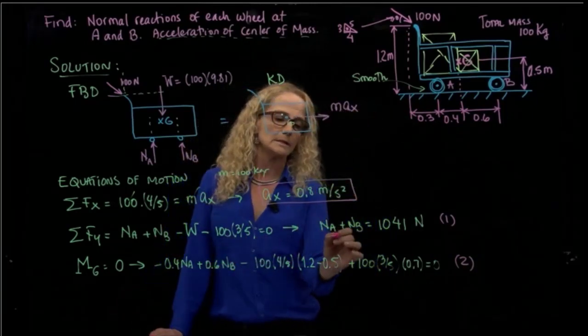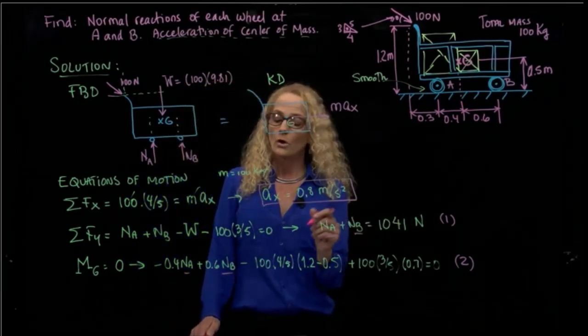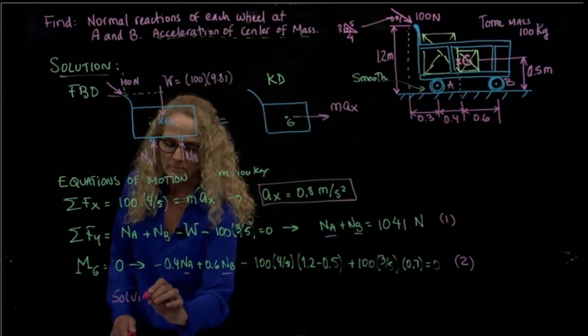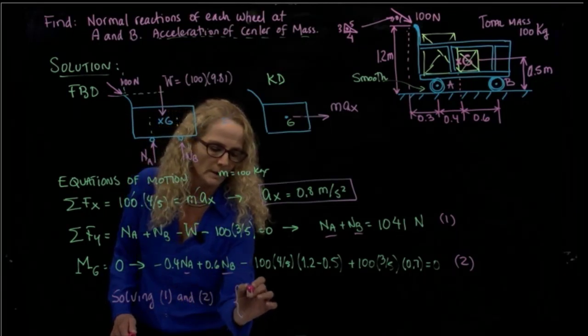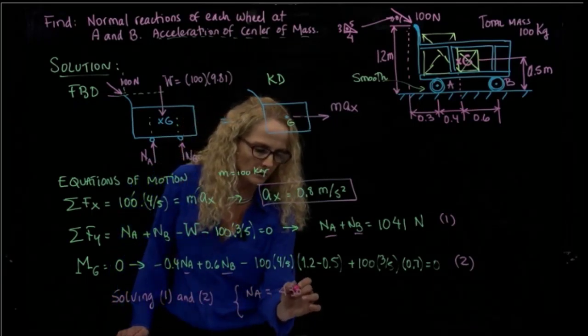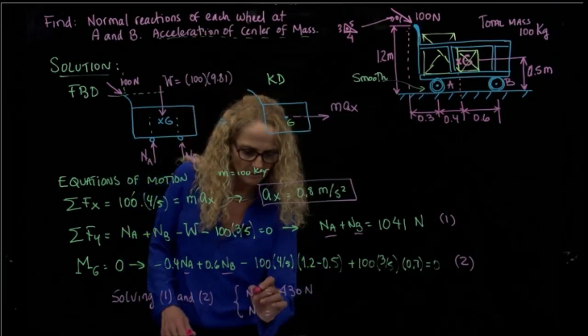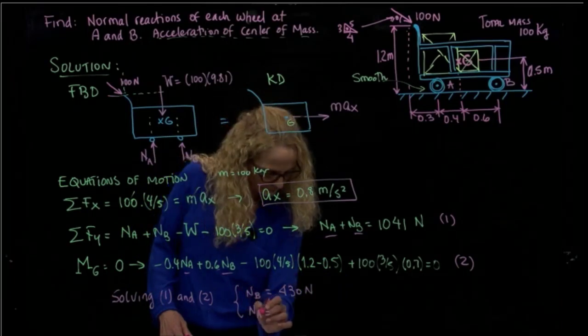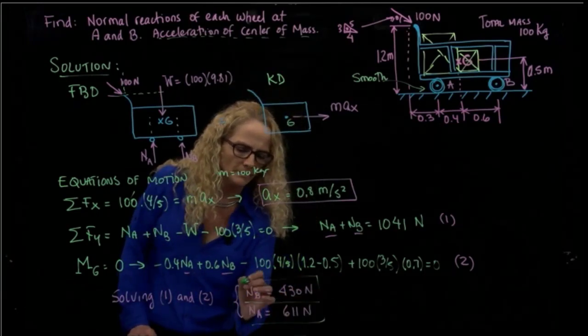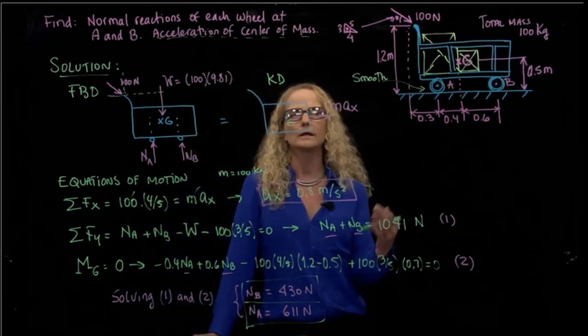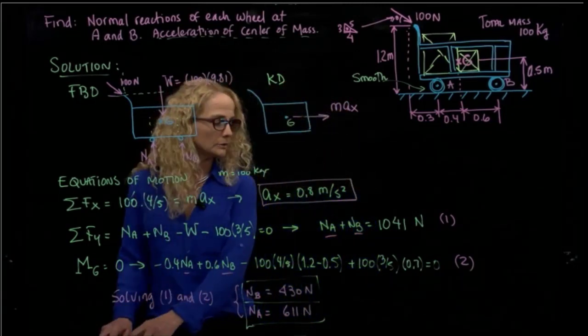We have one additional equation, which the unknowns are the same two unknowns, so we have one system of equations with two unknowns. So solving equations one and two, we get the solution: Nb is equals to 430 newtons, and Na is equals to 611 newtons. Please solve it yourself to practice, but you should be very comfortable taking moments of forces because we did that in statics very often. This is the solution for this problem.